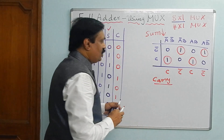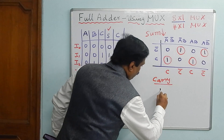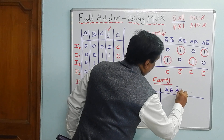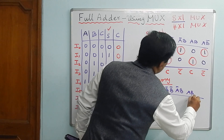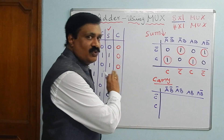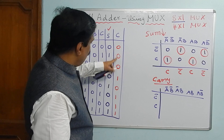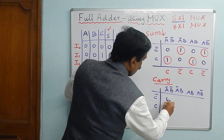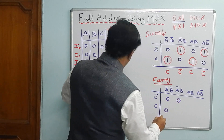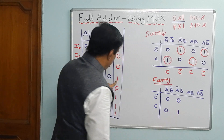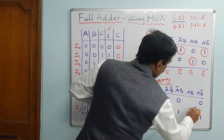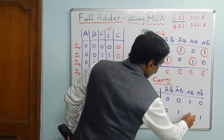For carry, take another K-map with A-bar B-bar, A-bar B, A-B, A-B-bar on one axis and C-bar, C on the other — the regular K-map. Now substitute the carry values: cells 0, 1, 2 are 0; cell 3 is 1; cell 4 is 0; cell 5 is 1; cells 6 and 7 are both 1.